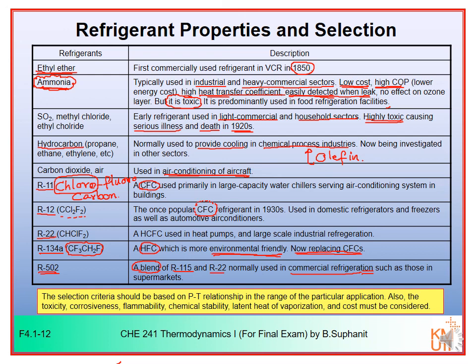The kind of refrigerant chosen depends on several selection criteria: the PT relationship characteristic, as well as toxicity, corrosiveness, flammability, chemical stability, latent heat of vaporization, and cost. In the next part, I'm going to show you examples of how to calculate the ideal VCR.